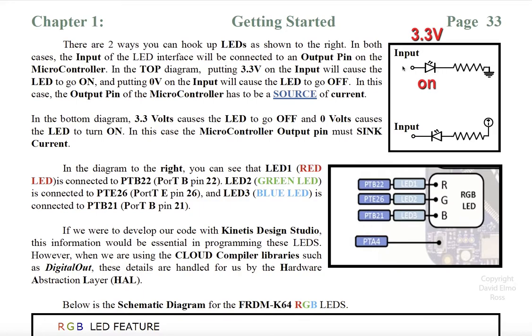So 1, which is 3.3 volts, will turn on the LED. 0 here, meaning 0 volts on both sides, means there's no difference in potential, which means there's no current flow, and the LED will stay off.